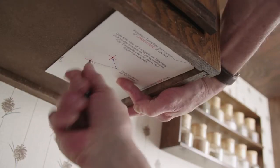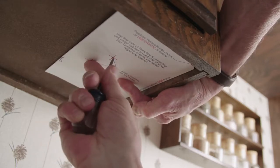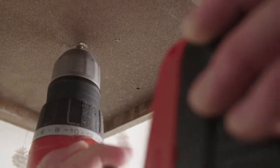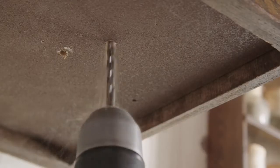Mark the two hole locations by pushing firmly through the template with the point of your awl. Next, drill completely through the underside of your cabinet with the 1⁄4-inch drill bit at these two locations.